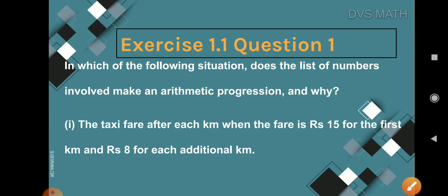Now let us move on to the exercise questions. This exercise has four questions with several sub-questions, but they are simple and easy. The first question asks: in which of the following situations does the list of numbers involved make an arithmetic progression, and why? We need to form a sequence and decide whether it forms an AP.